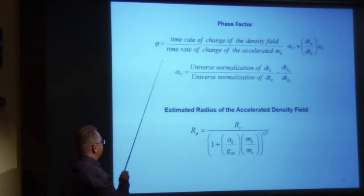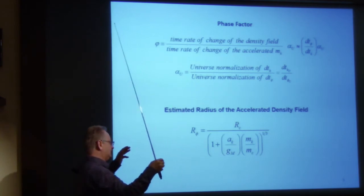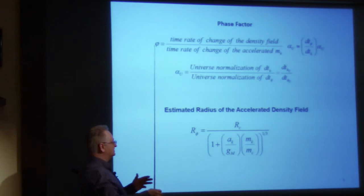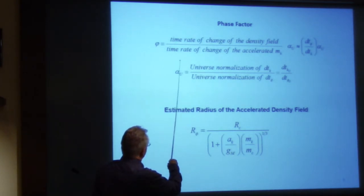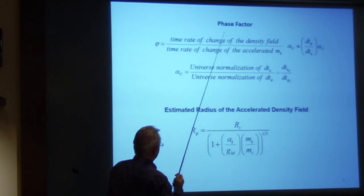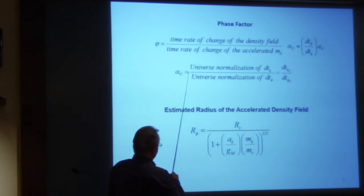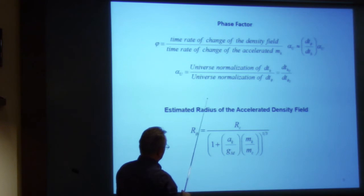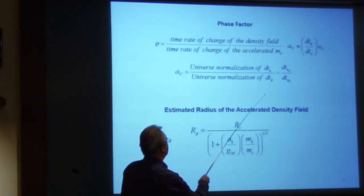In that acceleration equation, I have a phase factor, and what it turns out to be is the time rate of change of the density field — the thin shell and the mass inside it. It's the time rate change of the thin shell, which I call the density field. I had this back in 2014, but I recently found I had to add a universe normalization term: the time rate of change of the mass's effect on the universe divided by the universe normalization of the time rate of change of the density field on the universe.